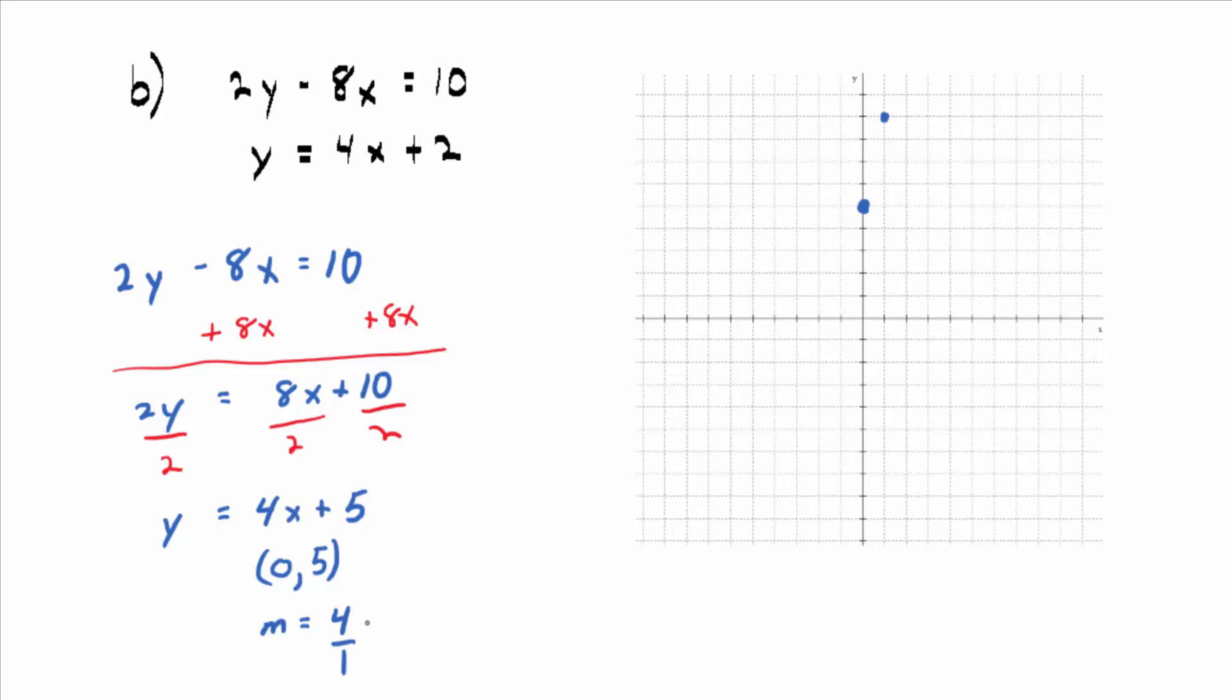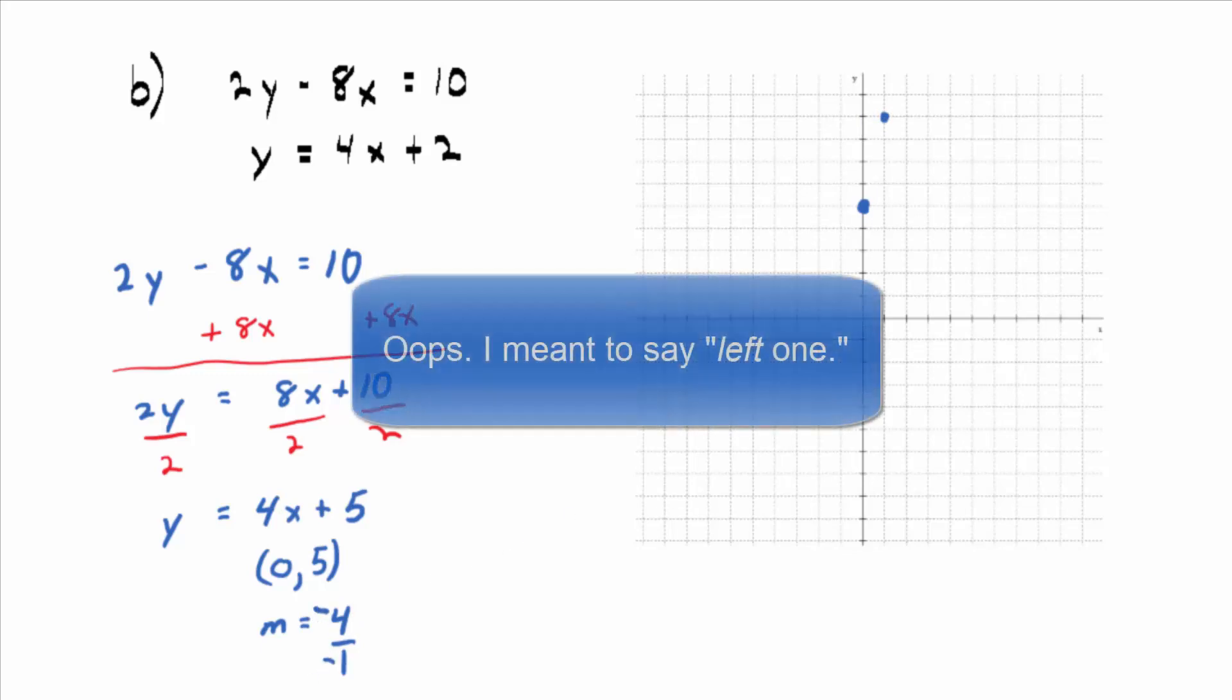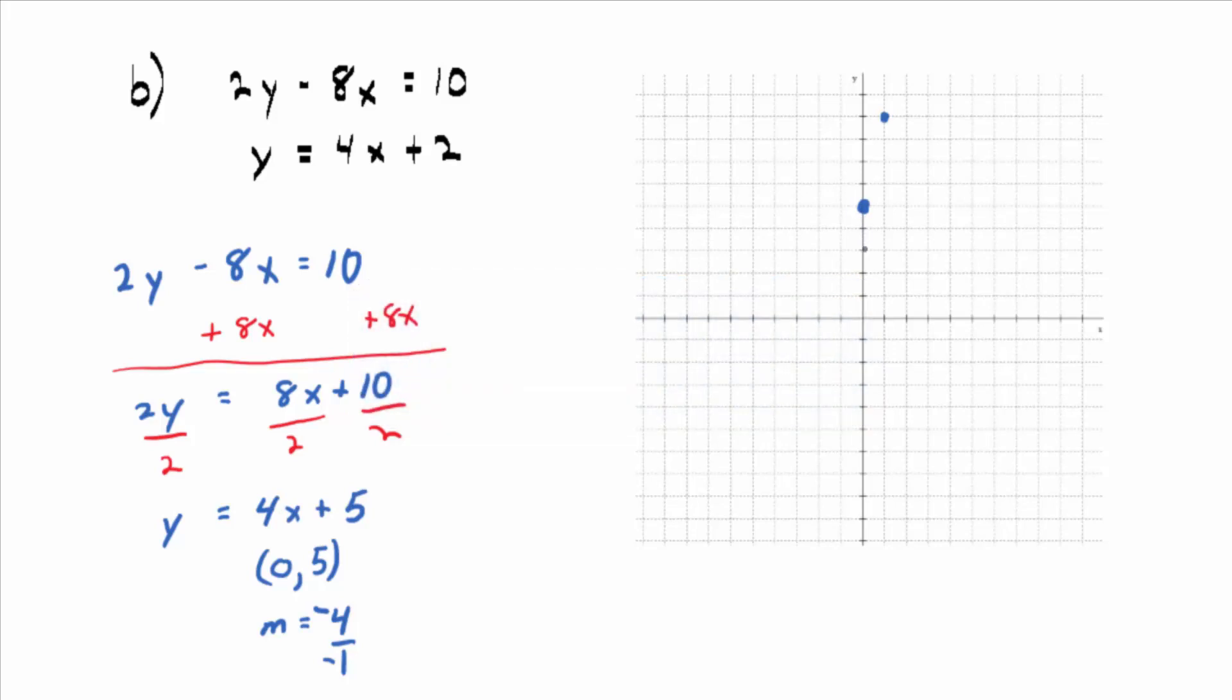What's an alternative to that? You go down 4 and left 1, right? Because negative 4 over negative 1 is the same as 4 over 1. So we could go, to put in a third point, we could go down 1, 2, 3, 4, and over 1.